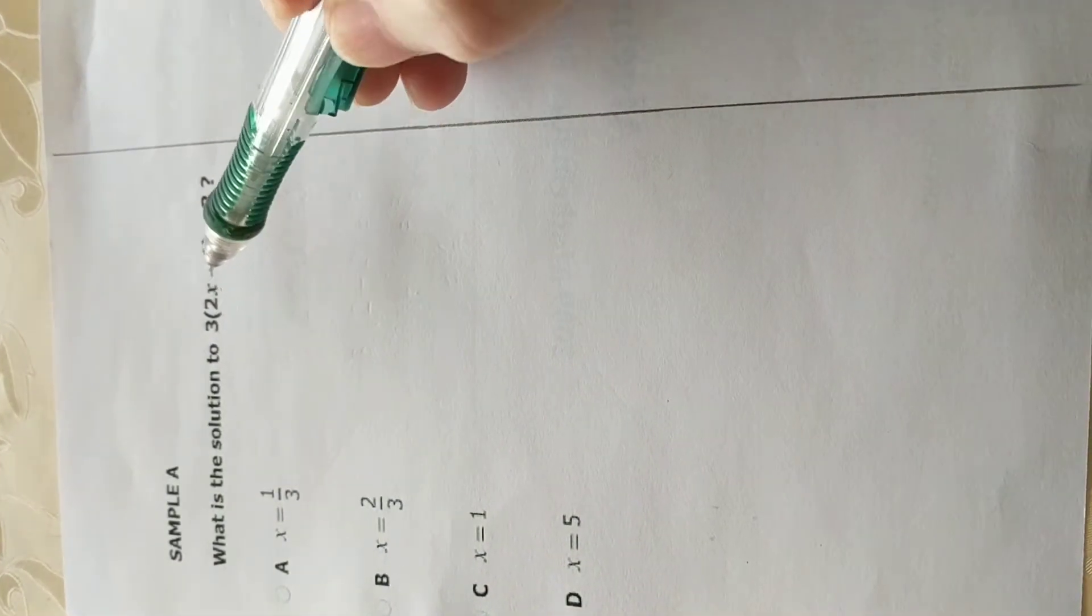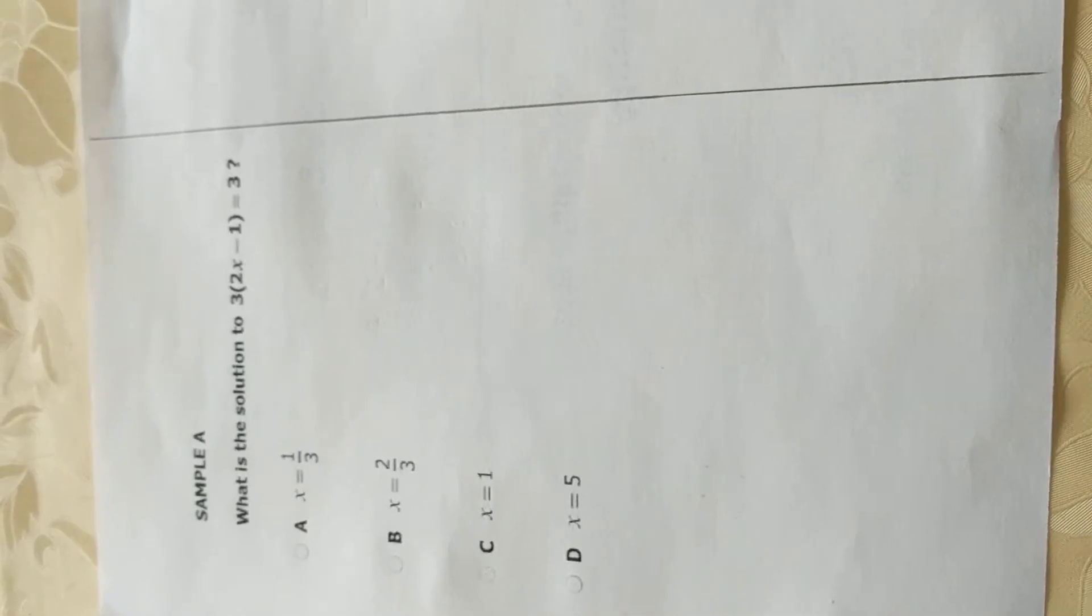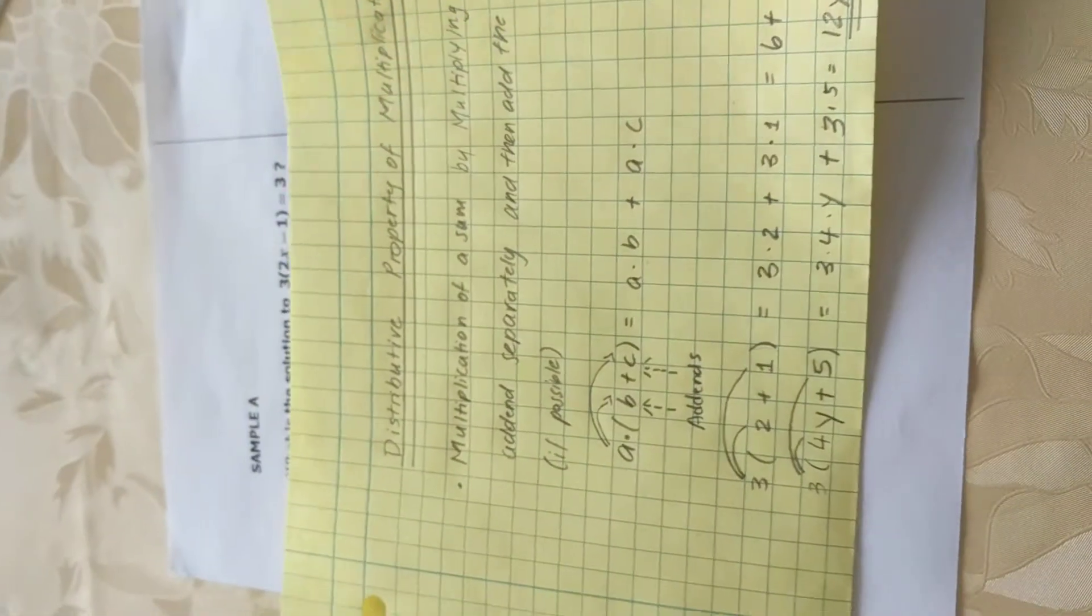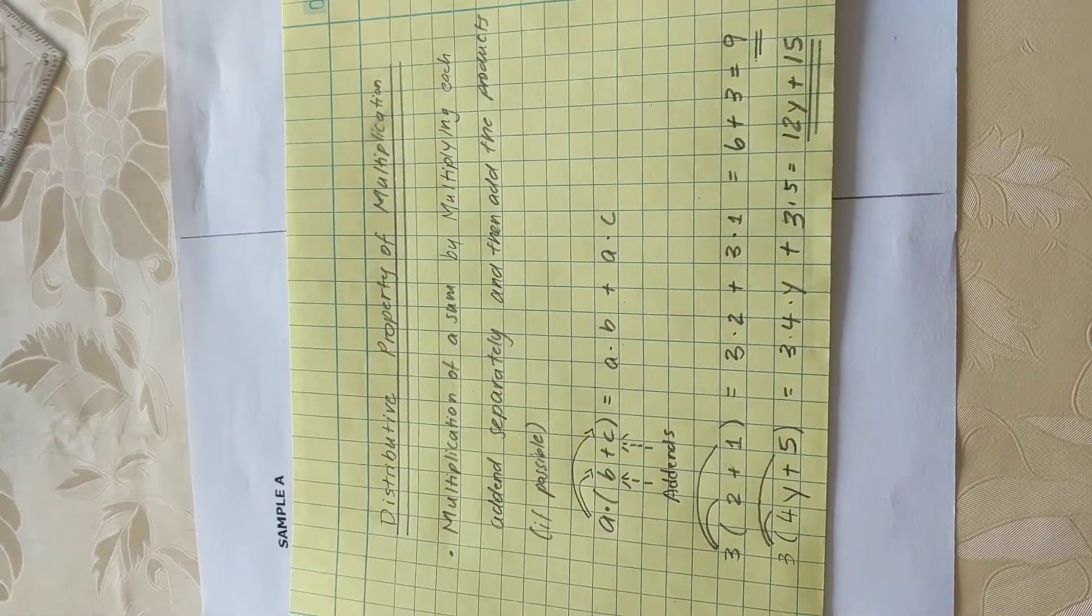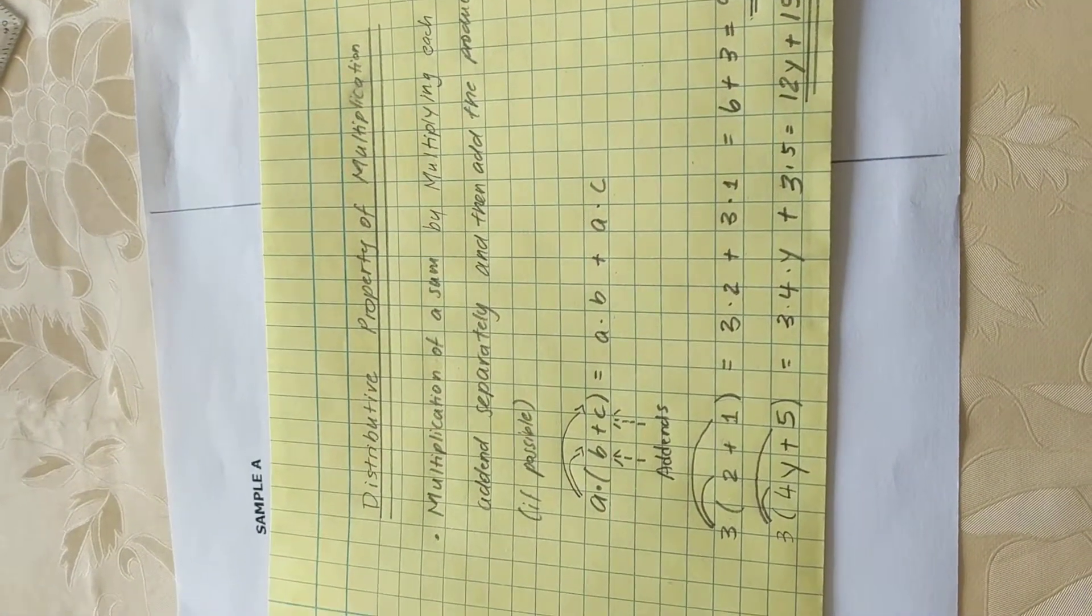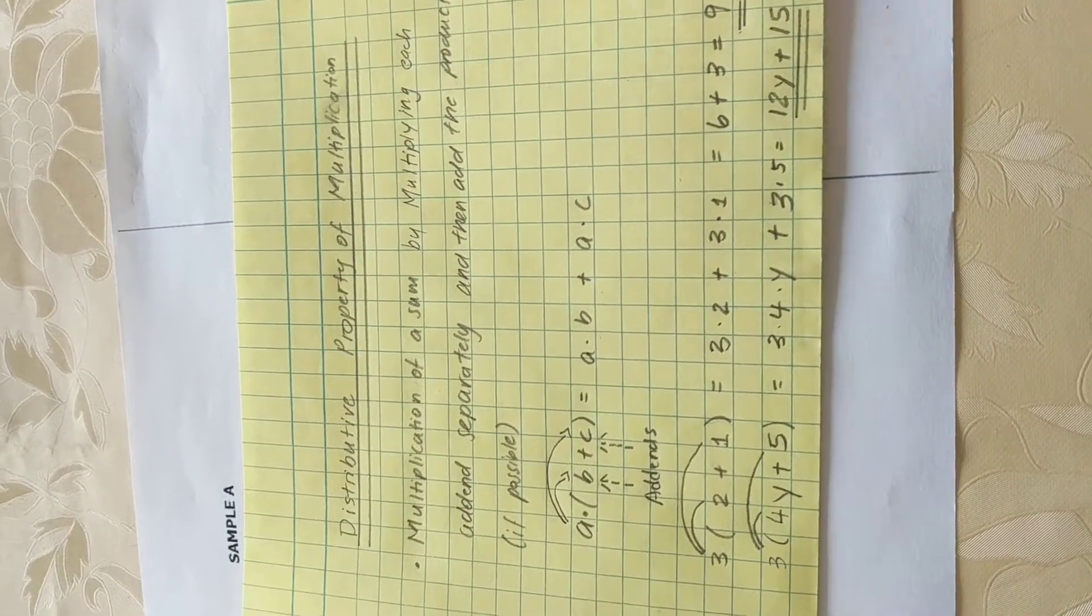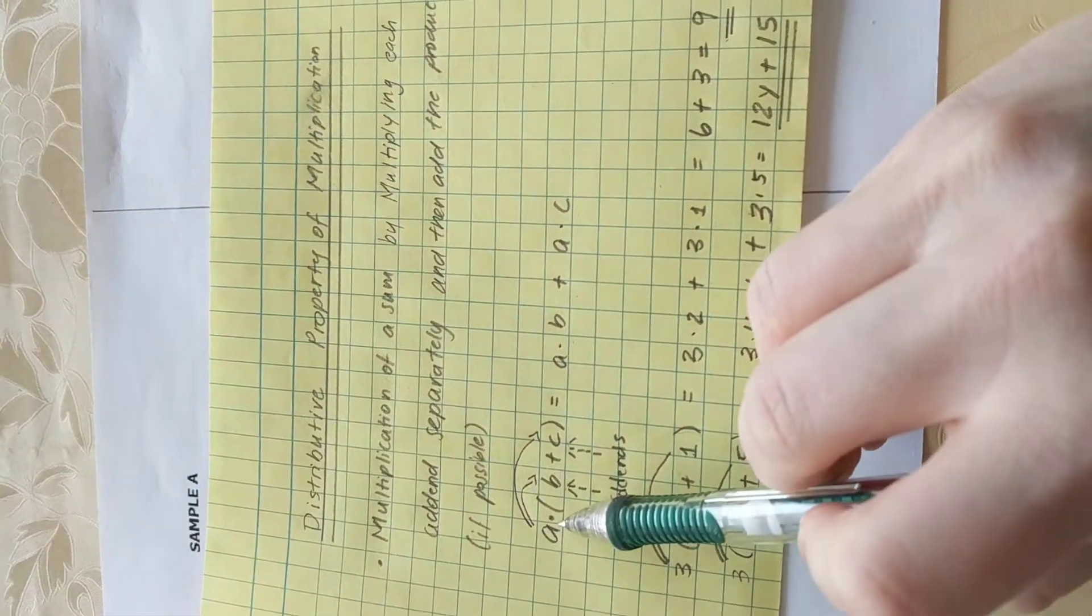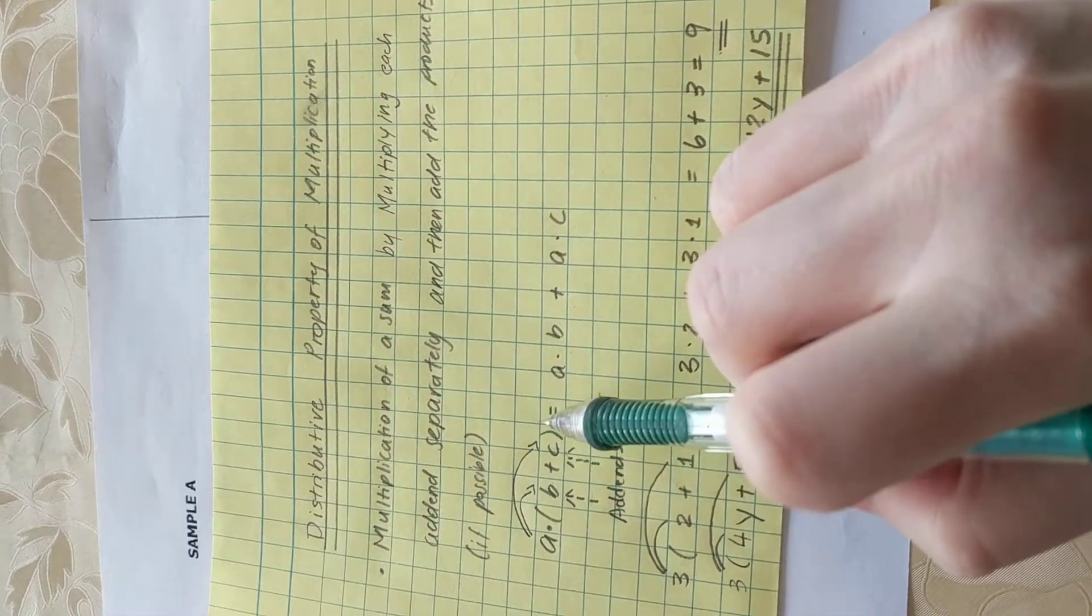To do so, the first step would be to open up the parenthesis by using the distributive property of multiplication. And the distributive property of multiplication simply says that it is multiplication of a sum by multiplying each addend separately and then add the products if possible. In general terms, that means a gets multiplied by open parenthesis b plus c close parenthesis.